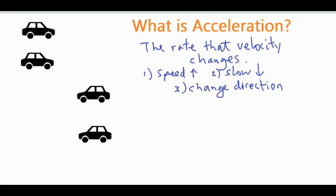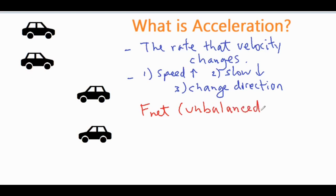We have a couple of main points: what acceleration is and the three types of acceleration something can experience. There is always some kind of net force — an unbalanced force. If something is speeding up, that unbalanced force is in the direction it's moving. If it's slowing down, it's opposite the direction of motion. If it's changing direction, the force is at some angle — for example, turning involves a centripetal force, which is perpendicular to its velocity.